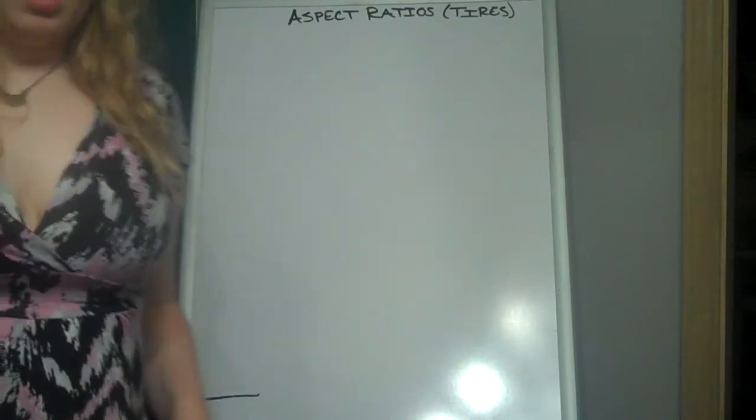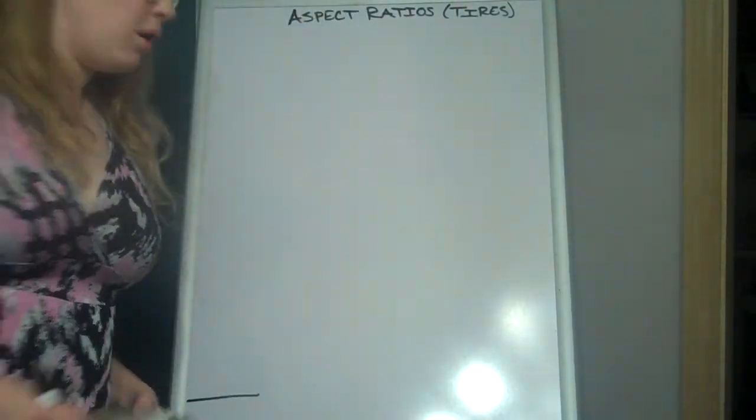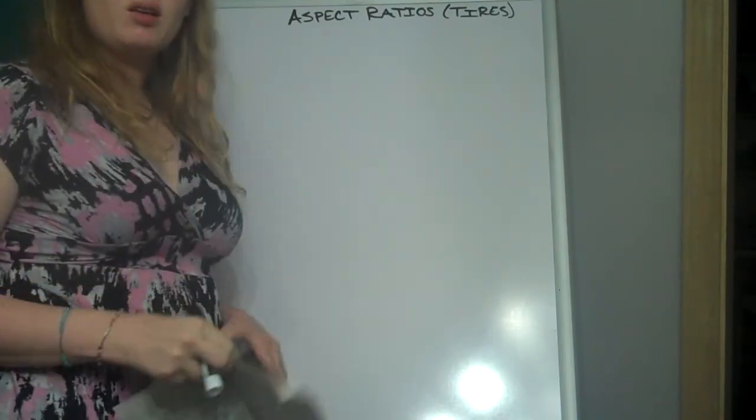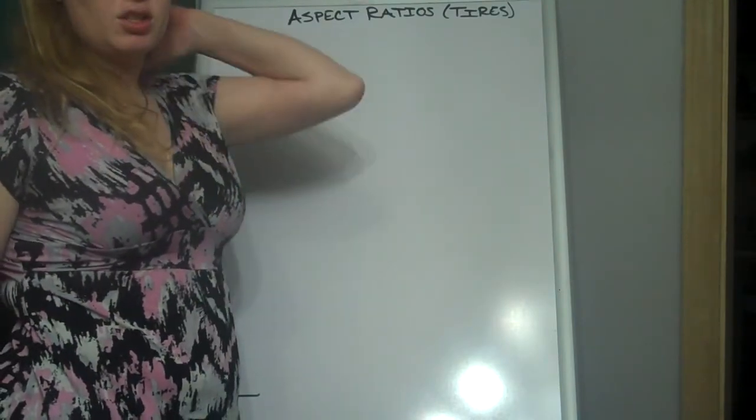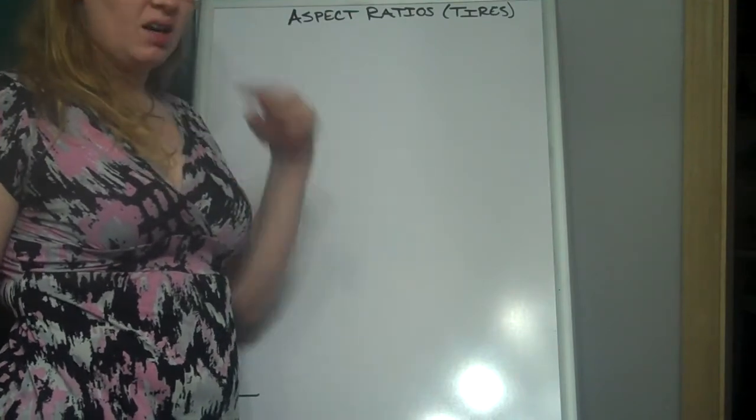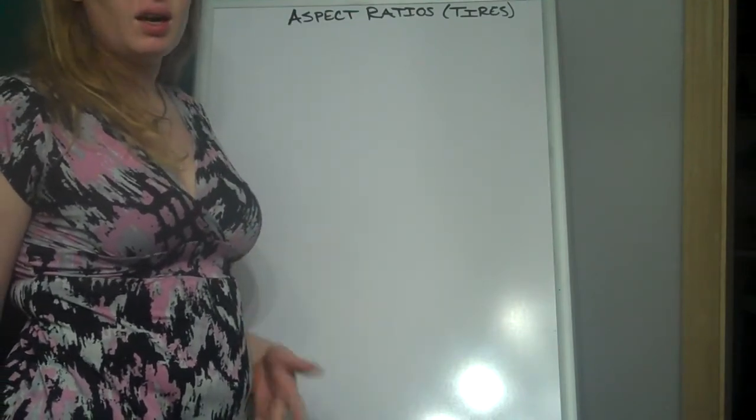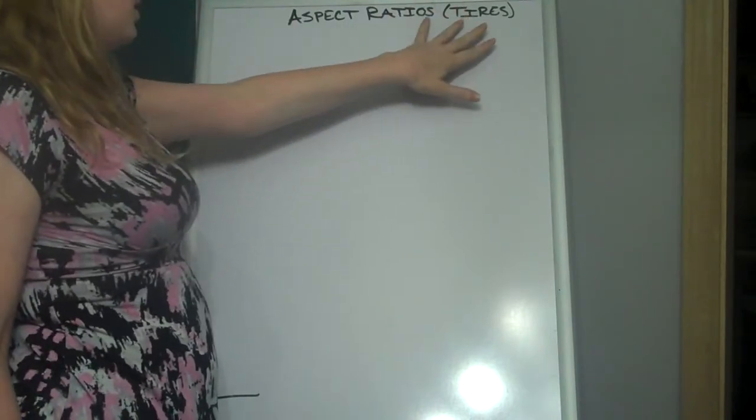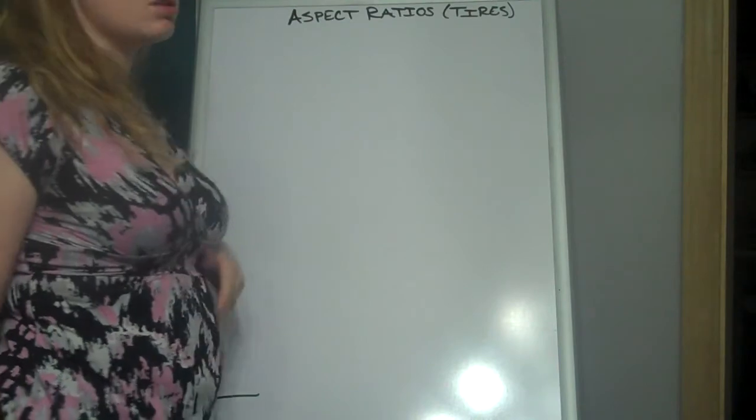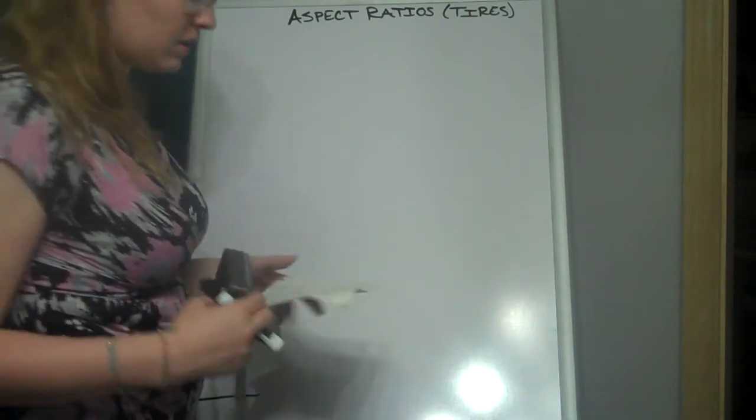All right. Today we're doing part two of aspect ratios. Yesterday we talked about aspect ratios of TVs and how we can use the aspect ratio among other things to determine the width and height. And today we're going to talk about aspect ratios with tires and how among other things we can use them to determine the circumference of the tire.